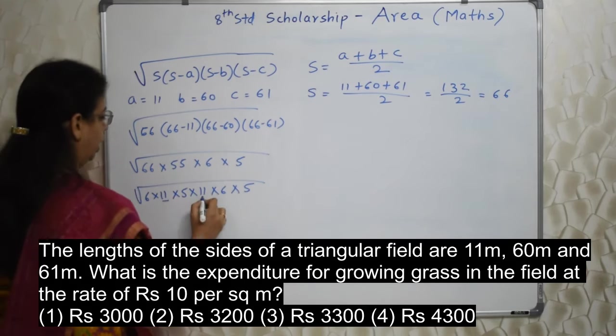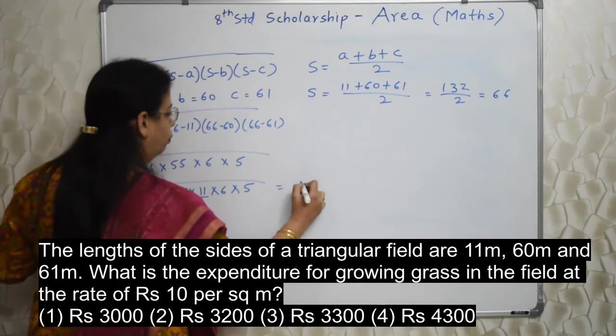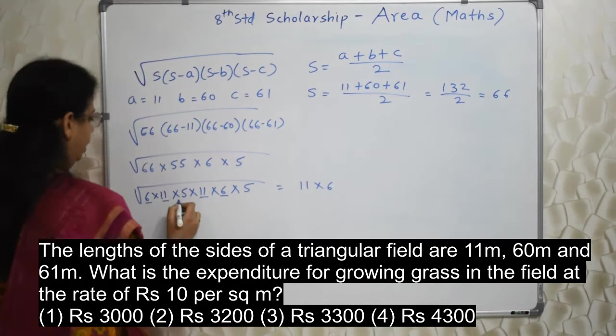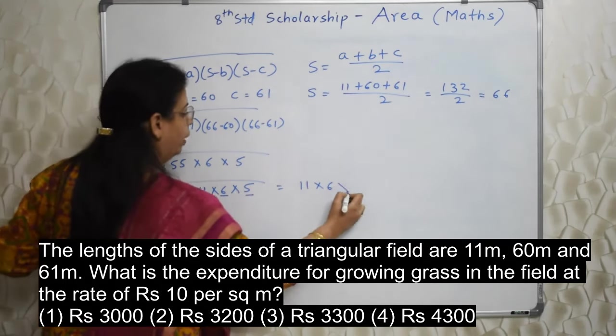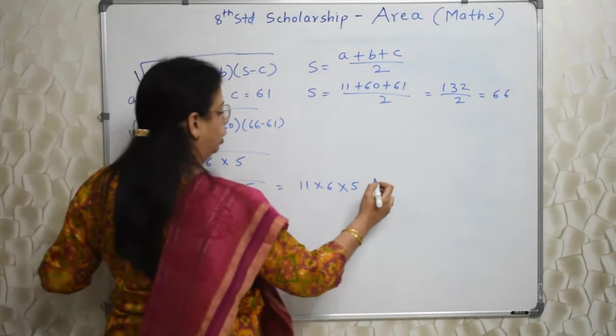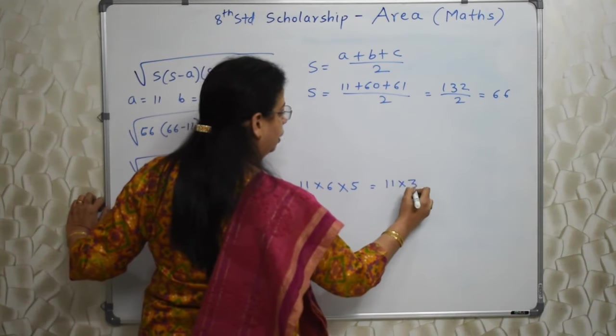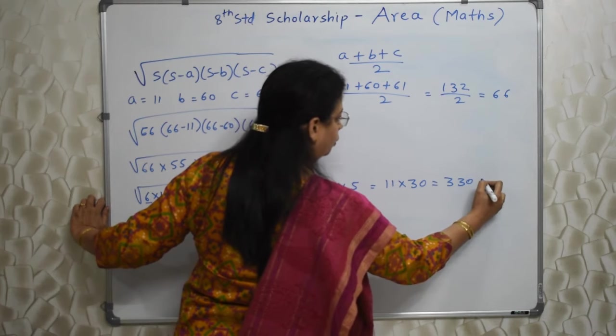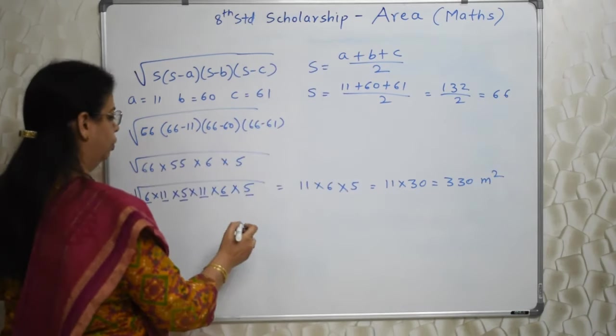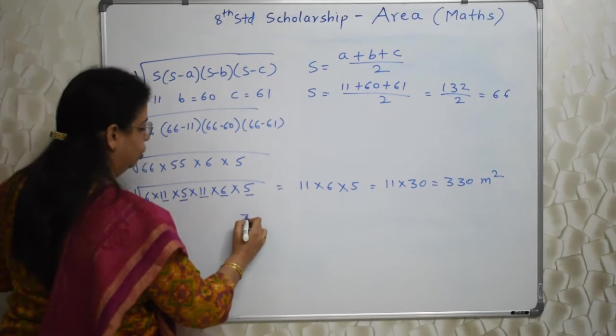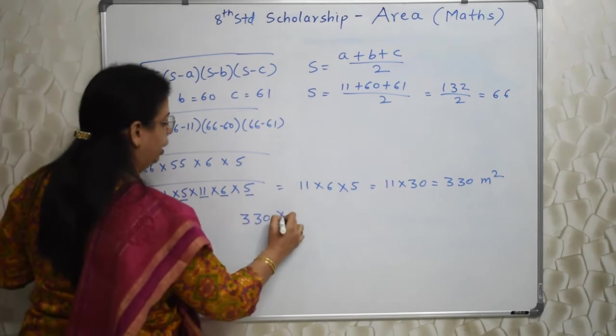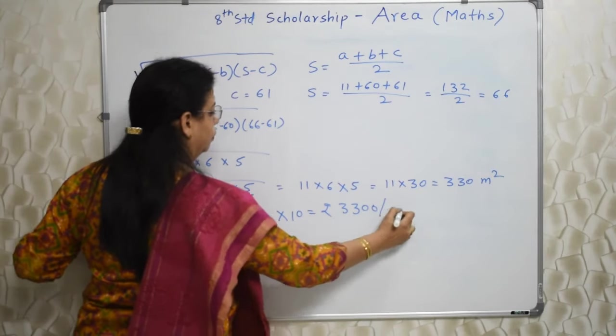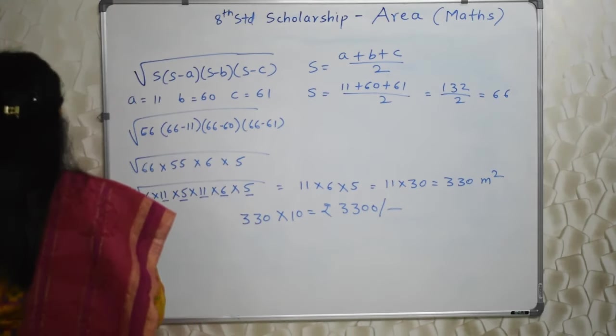So square root will be 11. 2 times 6, square root will be 6. 2 times 5, so square root will be 5. What is the multiplication? 11 into 30. So it is 330 which we had got there also in earlier method also. And rate is 10. So 330 area into rate, that is rupees 3,300. Same answer with another method.